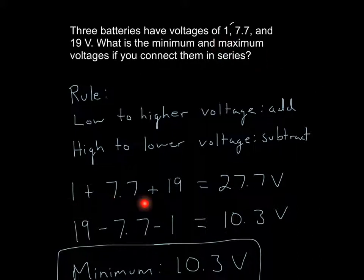So 1 plus 7.7 plus 19. And that's if I add them in series, starting from 1 and then going to 19. So I add them to get 27.7 volts.